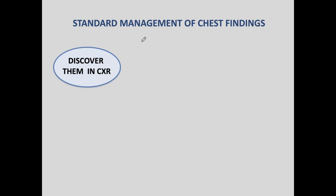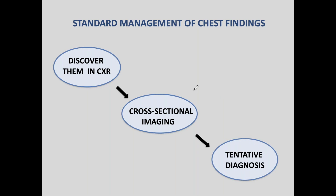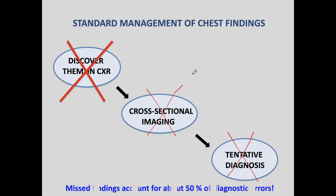The first step is to discover the findings in the chest ray. The second step, most of the time, is we do cross-sectional imaging — the majority of times a CT — and then with that information we make a tentative diagnosis. But if we miss the finding in the chest ray, no cross-sectional imaging is done and no diagnosis follows. This is very important because about 50% of our diagnostic errors are due to missed visible findings in the chest ray.